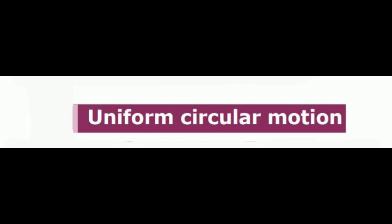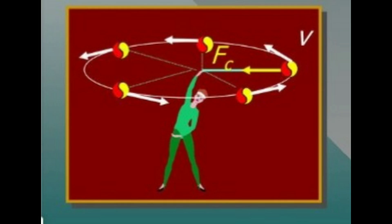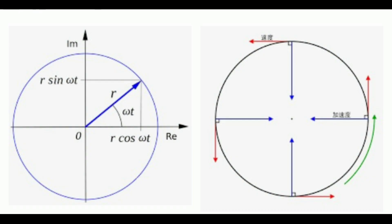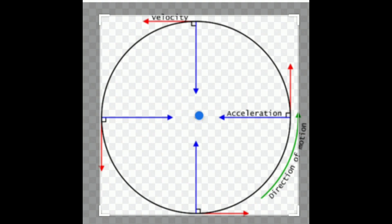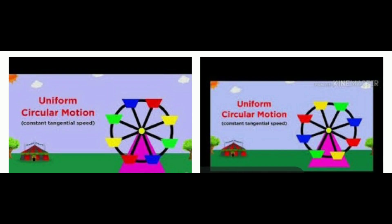Next: Uniform circular motion activity. Take a piece of thread and tie a small stone at one of its ends. Rotate the stone to describe a circular path with constant speed by holding the thread at the other end. Now release the thread and let the stone go. Can you tell the direction in which the stone moves after it is released?